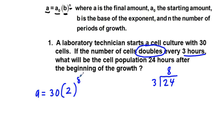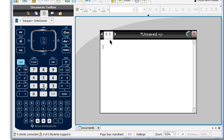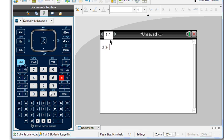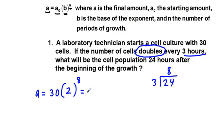We take that 24 divided by 3, we get 8. So we have 2 to the power of 8 times 30. We go to our calculator, we have 30 times 2 to the 8th power, and we get 7,680 cells.